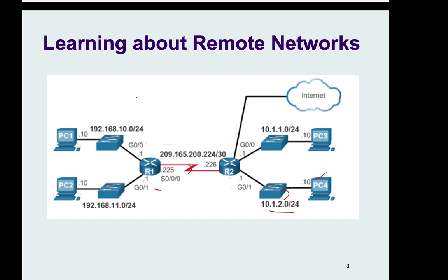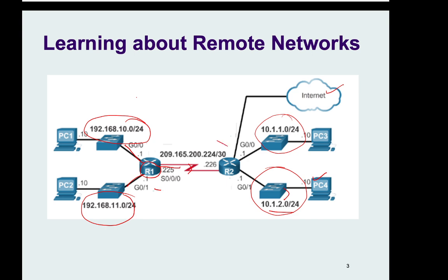In that case, R1 has no direct connection. For the R1 router, there is no direct connection to certain networks — obviously the internet network and those other networks. Those networks do not have a direct connection with R1, so R1 cannot know about them on its own.